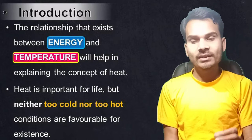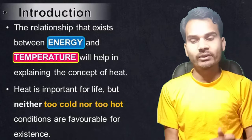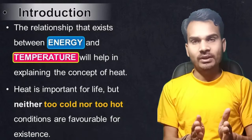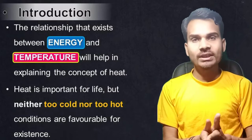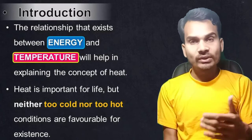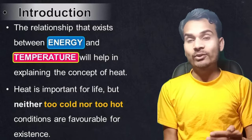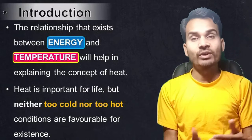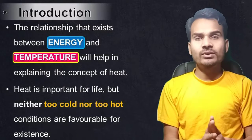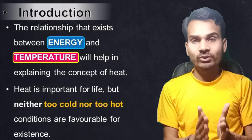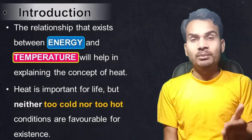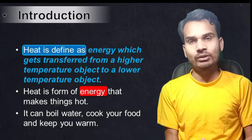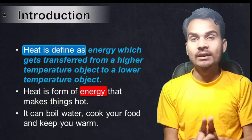Heat is important for life, but neither too cold nor too hot conditions are favorable for existence. If we compare other planets with Earth, Earth's temperature is moderate because life exists here. On other planets, the temperature makes it very difficult to sustain life. A moderate temperature, which means roughly room temperature, is around 20 to 22 degrees Celsius.